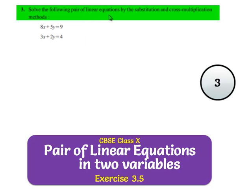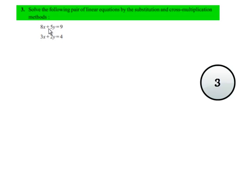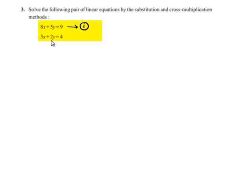Solve the following pair of linear equations by the substitution and cross multiplication methods. The first equation given is 8x plus 5y is equal to 9 — name this equation number 1. The second equation is 3x plus 2y is equal to 4 — name this equation number 2. We are asked to solve the linear equations by both substitution method and cross multiplication method.